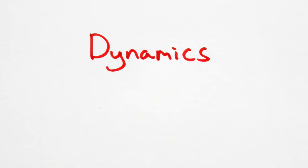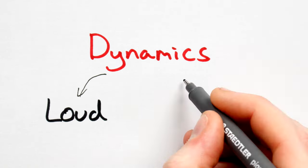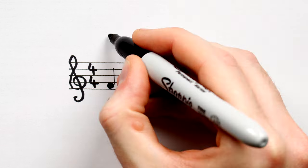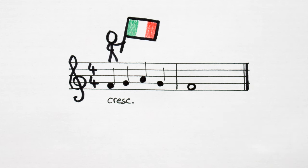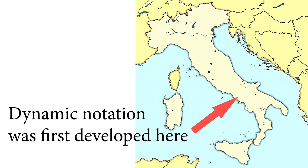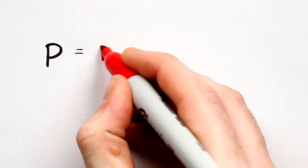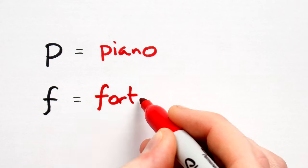The word dynamics refers to the loudness or softness of music. Composers put little words, oftentimes little Italian words and symbols, on the music to tell us how loud or soft to play. Why Italian? Well, history. Anyways, we call these dynamic terms or musical terms, the most important of which are piano and forte.